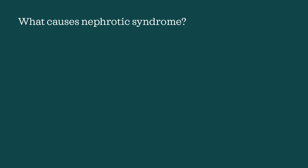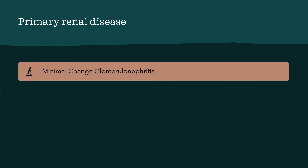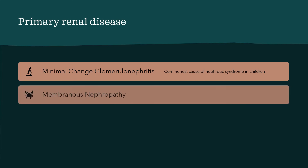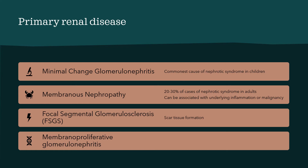The disease is either a result of a primary renal disease or is secondary to a pre-existing systemic disorder. There are a few types of primary renal disease — remember, this isn't due to a pre-existing condition. First, we have minimal change glomerulonephritis, where damage cannot be seen under a regular microscope; this is the most common cause of nephrotic syndrome in children. Then there is membranous nephropathy, which is common in adults and might be associated with an underlying malignancy. The formation of scar tissue in the kidney is termed focal segmental glomerulosclerosis, or FSGS for short. Lastly, there is membranoproliferative glomerulonephritis, a rare disease due to an abnormal immune response.